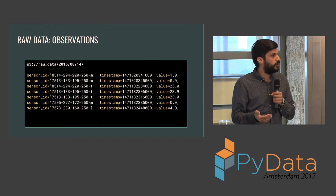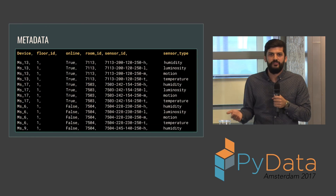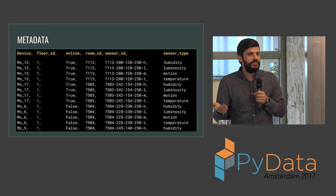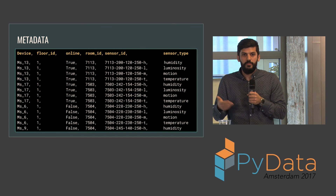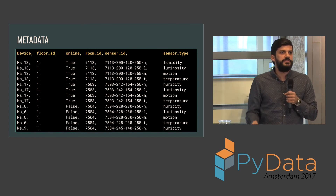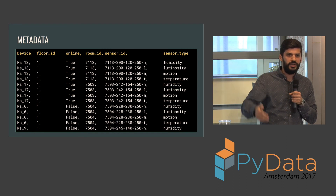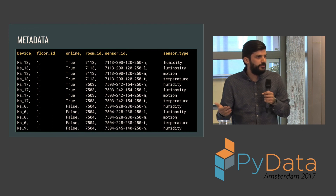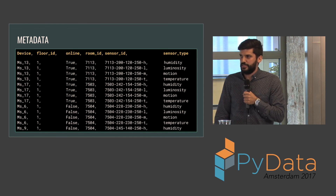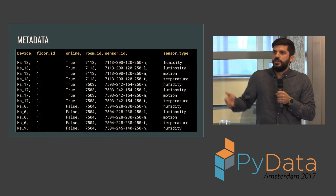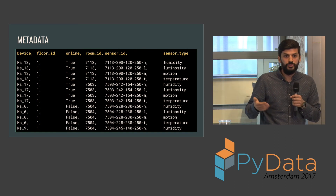On top of this raw data, we also have a metadata file in the cloud that for each sensor gives us meta-information such as what type it is, what floor it's installed on, what room, and whether it's online or offline. Instead of sending this with each incoming data point, which would be redundant and a huge overhead, we just have this metadata file that we can use later to do simple group-bys — for example, retrieving all the data of all sensors within one room.